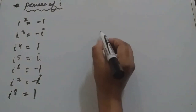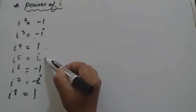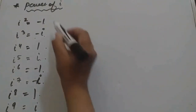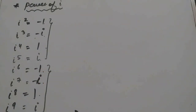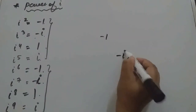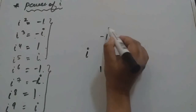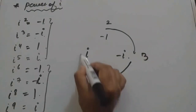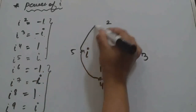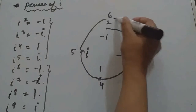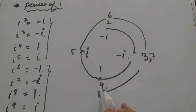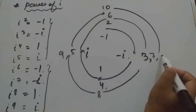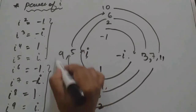The pattern is: i squared gives minus 1, i cubed gives minus i, i to the power 4 gives 1, i to the power 5 gives i, and then these four values — minus 1, minus i, 1, i — keep repeating for powers 6, 7, 8, 9, 10, 11, 12, and so on.